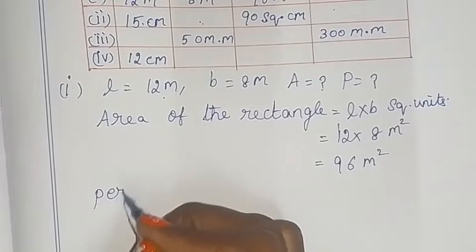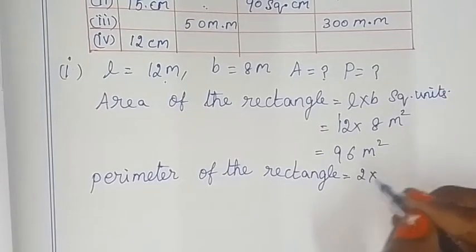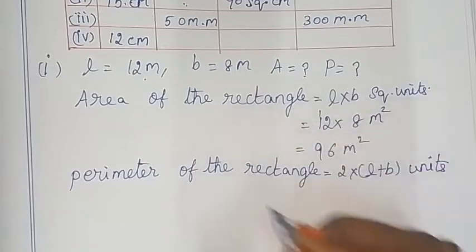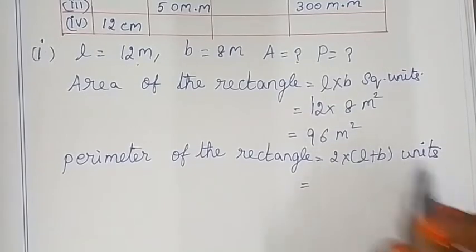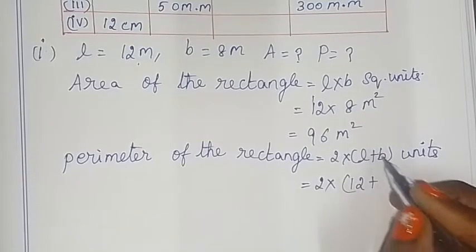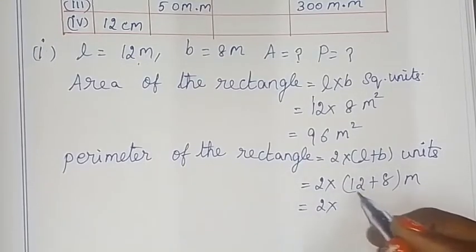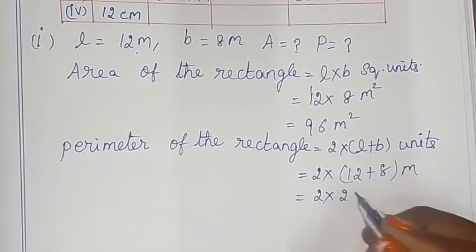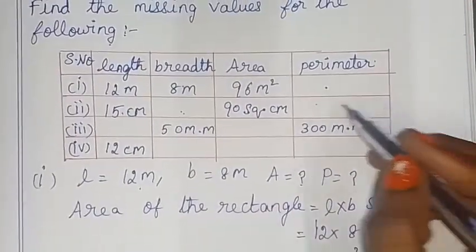Now for the perimeter. Perimeter of a rectangle is equal to 2 into (L + B) units. Perimeter is the borderline measurement. So that is 2 into (12 + 8). Now 12 + 8 = 20, so 2 × 20 = 40m. The perimeter of the rectangle is 40m.